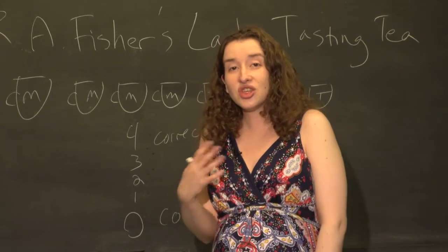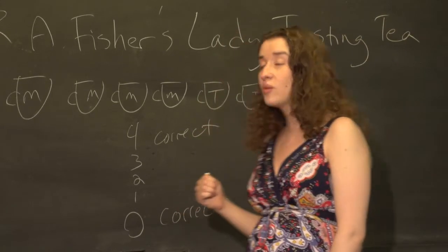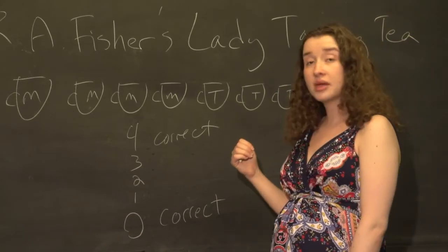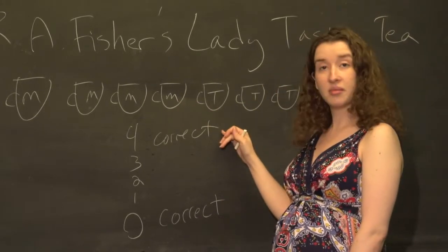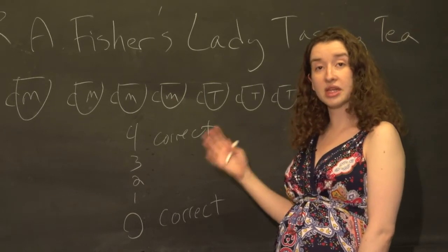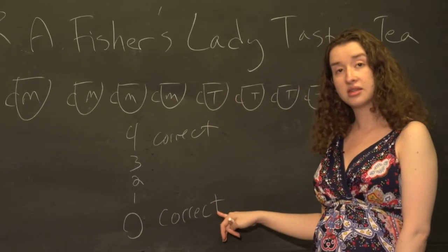If that's true, that she does not have this ability, then we should be able to figure out the probability that when she chooses four cups at random, they'd all be milk, or the probability that when she chooses four cups at random, they'd all be tea.